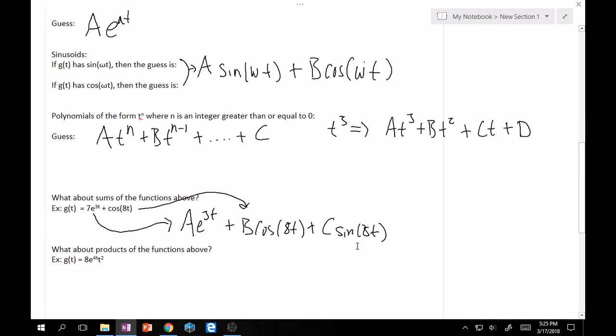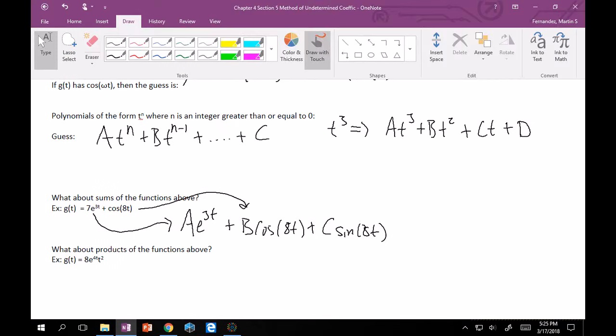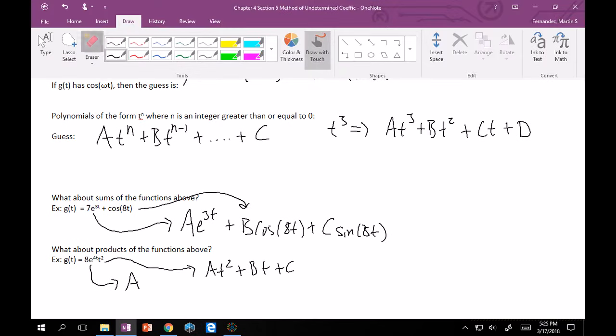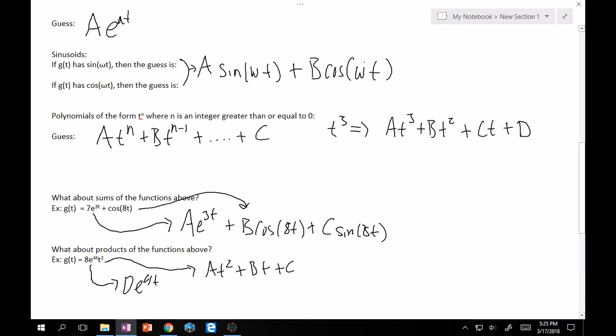Now, what about products of functions? So here we have 8e^(4t) times t^2. So what would our guess be here? Again, exploit the linearity of this. We take our guess for e^(4t) and that would be A times e^(4t). Actually let me do the t^2 one first because I know where this is going. The guess for t^2 would be At^2 + Bt + C. And then the guess for e^(4t) would be, in this case if we keep our convention, De^(4t). Without me telling you anything, naturally I would hope that some of you would want to just multiply these two together, in which case you're right. You should do that. Therefore your guess is De^(4t) times At^2 + Bt + C.